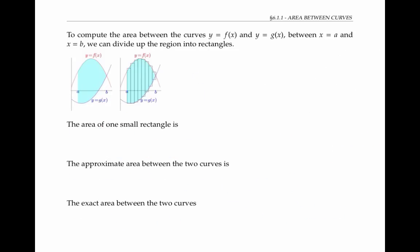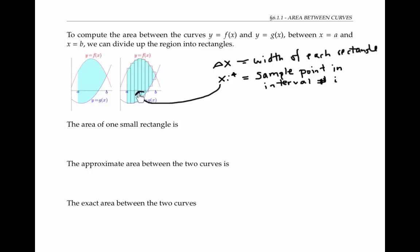To compute the area between two curves, y equals f of x and y equals g of x, in between the x values of a and b, we can again divide up the region into tall skinny rectangles, as shown in this picture. Once again, let delta x be the width of each rectangle, and let x sub i star represent a sample point in the i-th interval. The base of any of these rectangles is given by delta x.